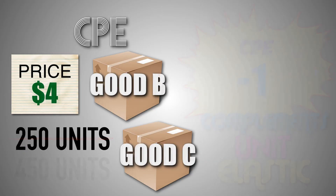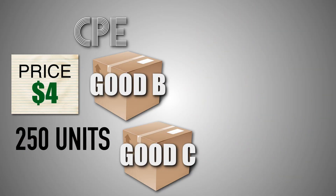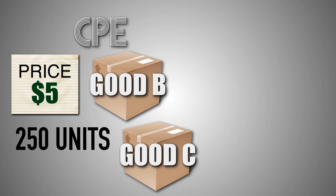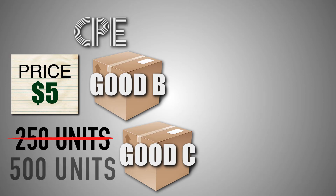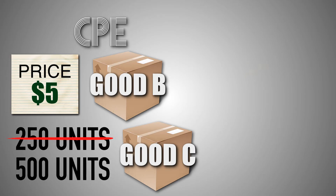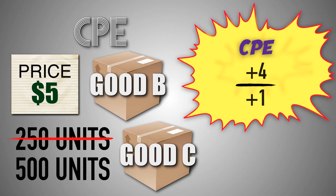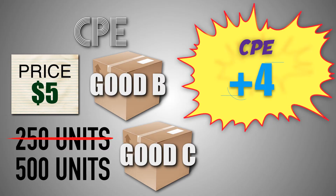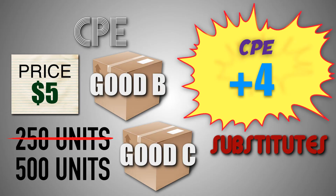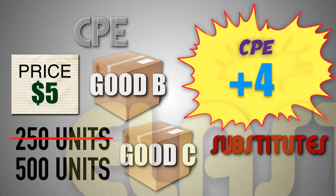Now suppose that the price of good B increases from $4 to $5, and the demand for good C increases from 250 units to 500 units. When the price of good B jumped by 25%, consumers increase their consumption of good C by 100%. This gives us a cross-price elasticity coefficient of positive 4, which means that good B and good C are substitute goods, and the demand between good B and good C is cross-price elastic.